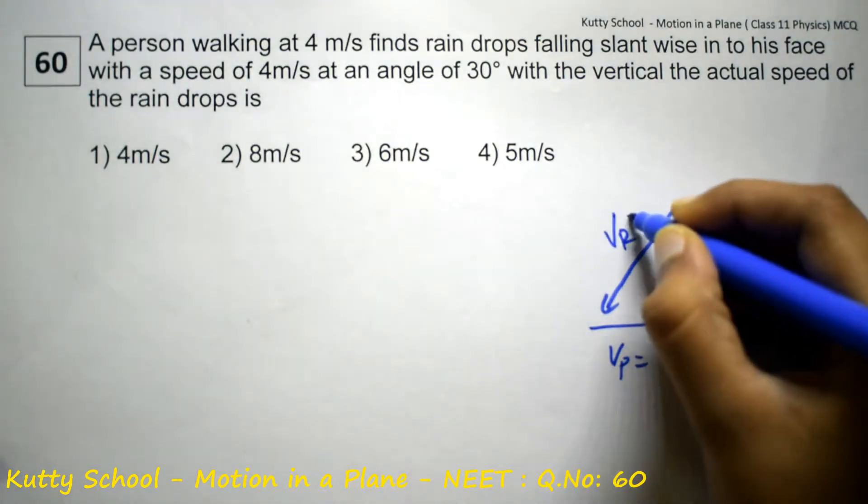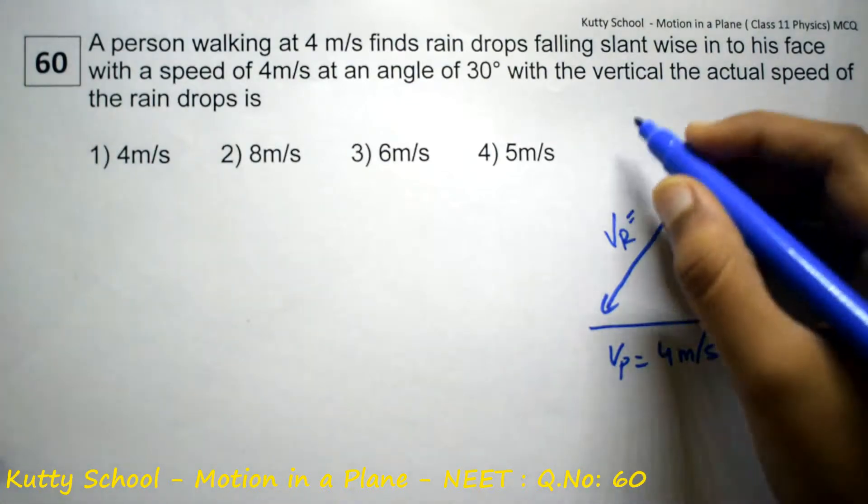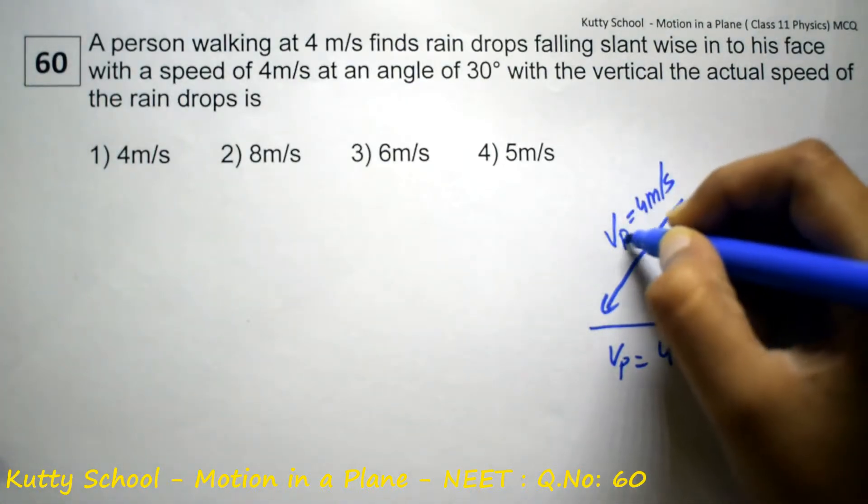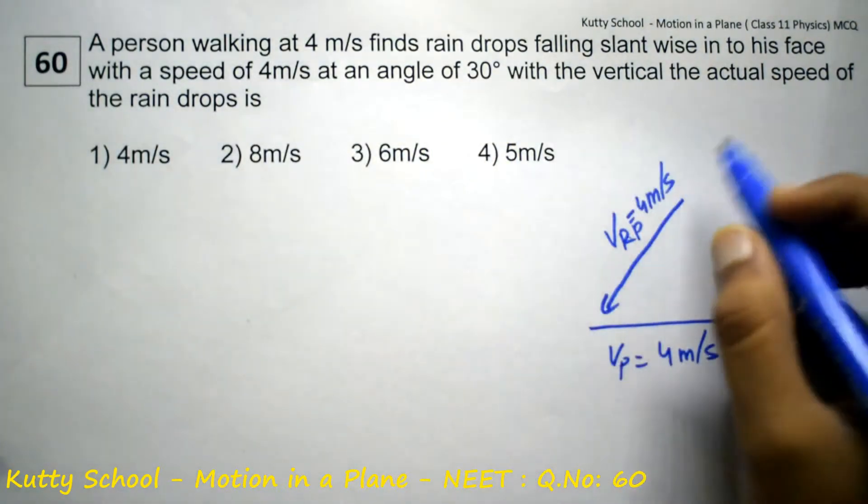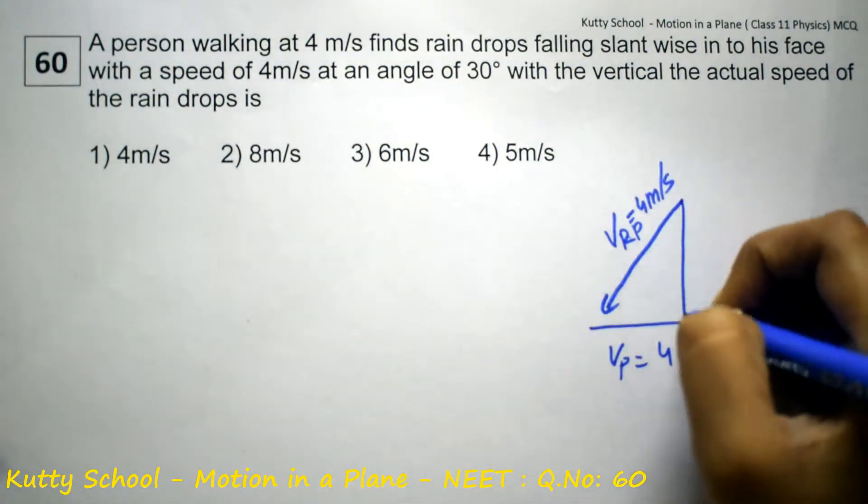Velocity of raindrops is equal to 4 meters per second with respect to the person, at an angle of 30 degrees with the vertical.